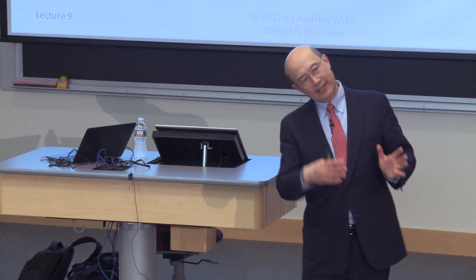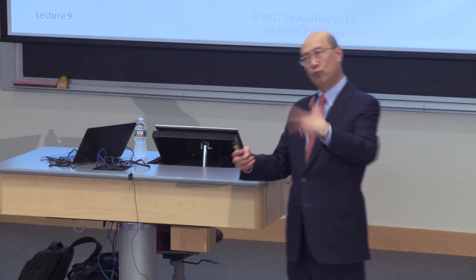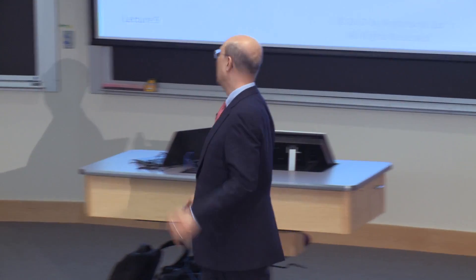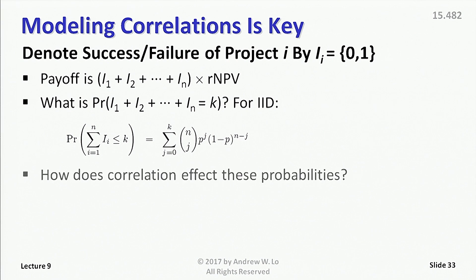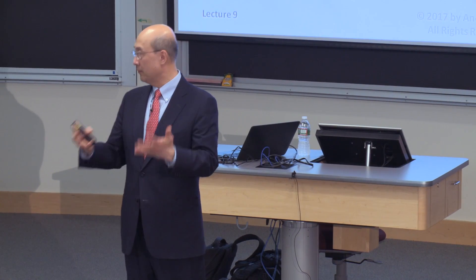If outcomes are independently and identically distributed — like those two green pieces of paper I started out with — then the answer is simple: the distribution is just a binomial, which you covered in your introductory data models and decisions course. But what if the correlation is not zero? How do we capture that? How do we capture what happened in the housing market? We know from that experience that correlations need not be zero.